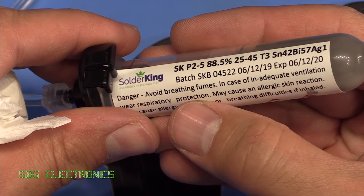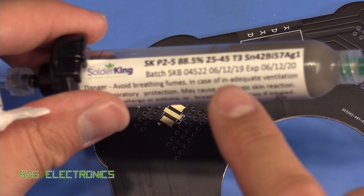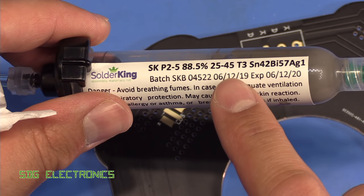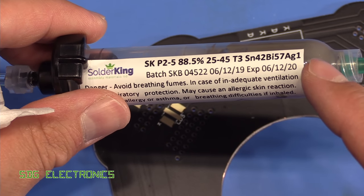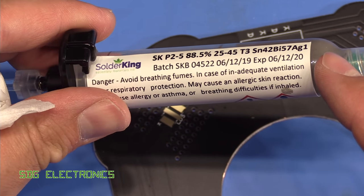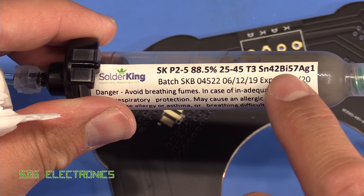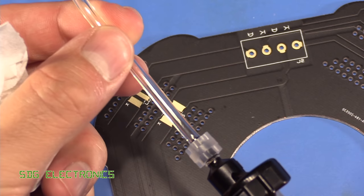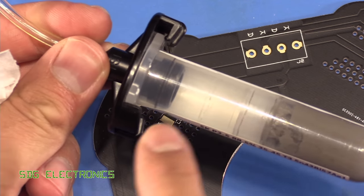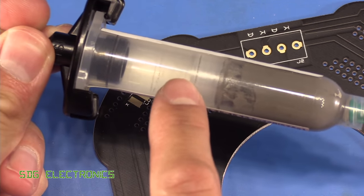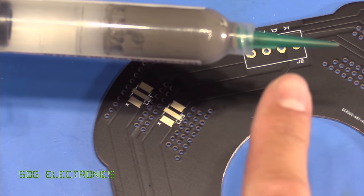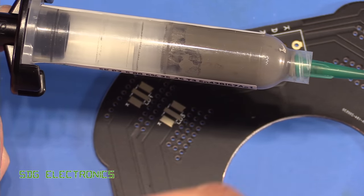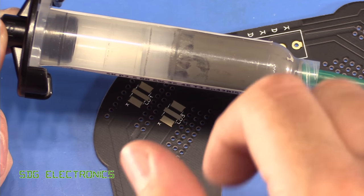So today we'll use the SolderKing solder paste which I received back in December. This has actually only been stored in the lab, I didn't keep it in the fridge, so we'll see how it behaves after six months at room temperature. This is the bismuth type solder so low melting point. I've attached it to my solder paste dispenser and what it's doing is just forcing compressed air onto the plunger and pushing the solder paste out the nozzle. It just makes it a little bit easier to use than using a syringe plunger.